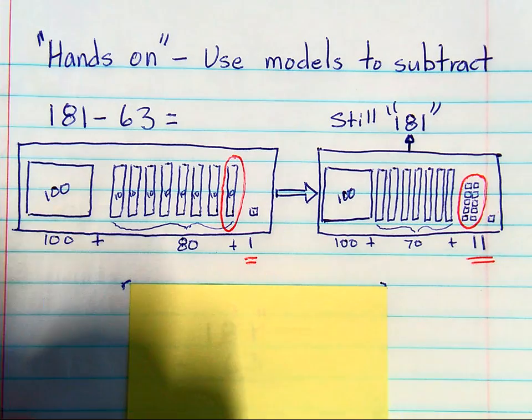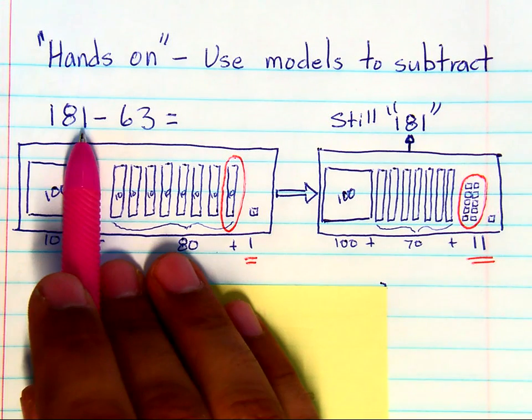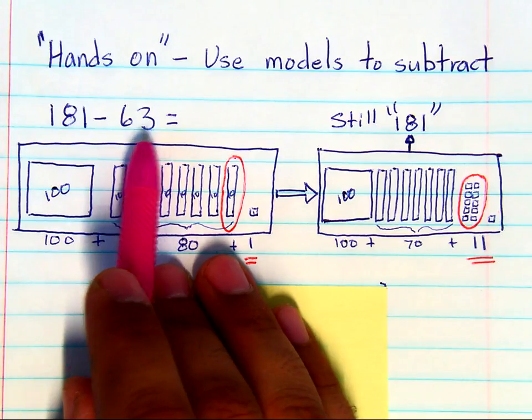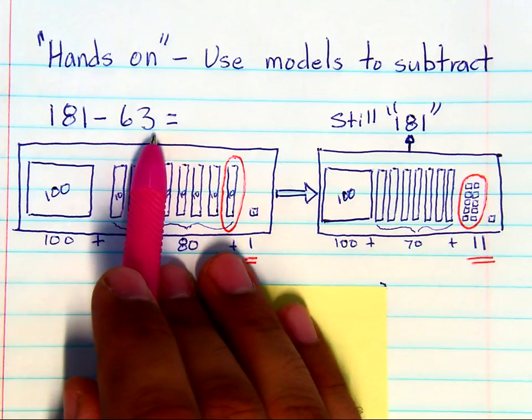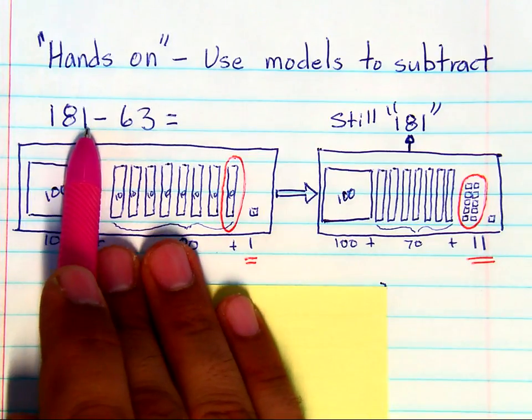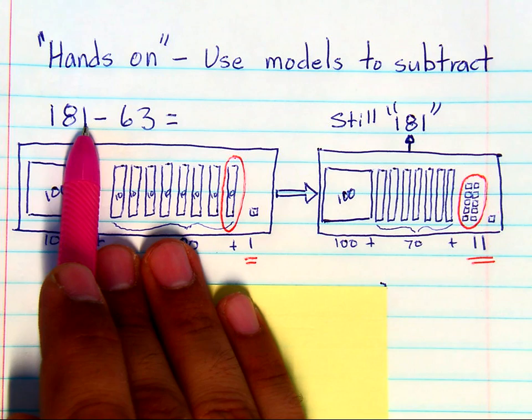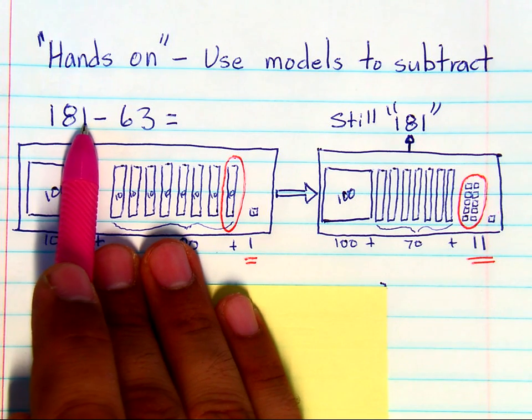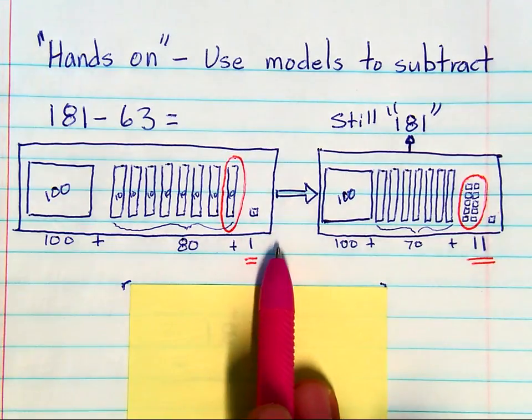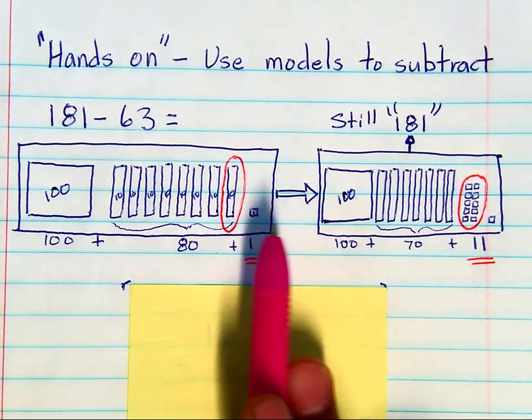Now a problem in the textbook is 181 minus 63, and to figure that out we're going to have to break up the tens and give it to the ones. Now when we use base 10 blocks in the classroom, this is ultimately what it looks like, but when you draw it, it doesn't quite look the same.